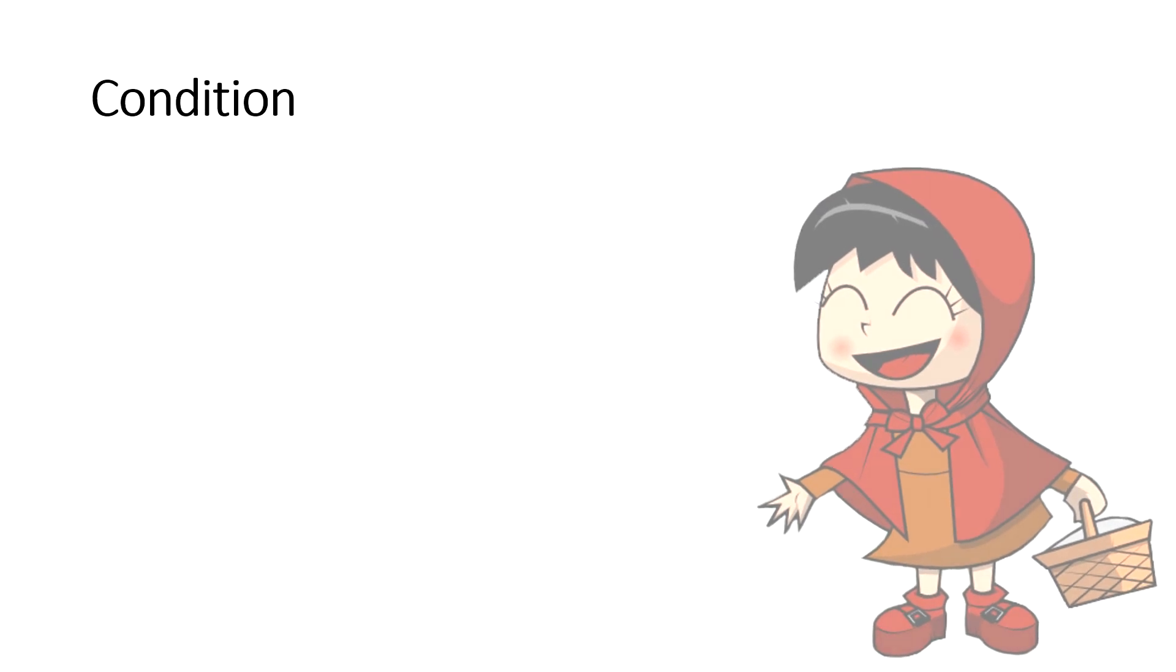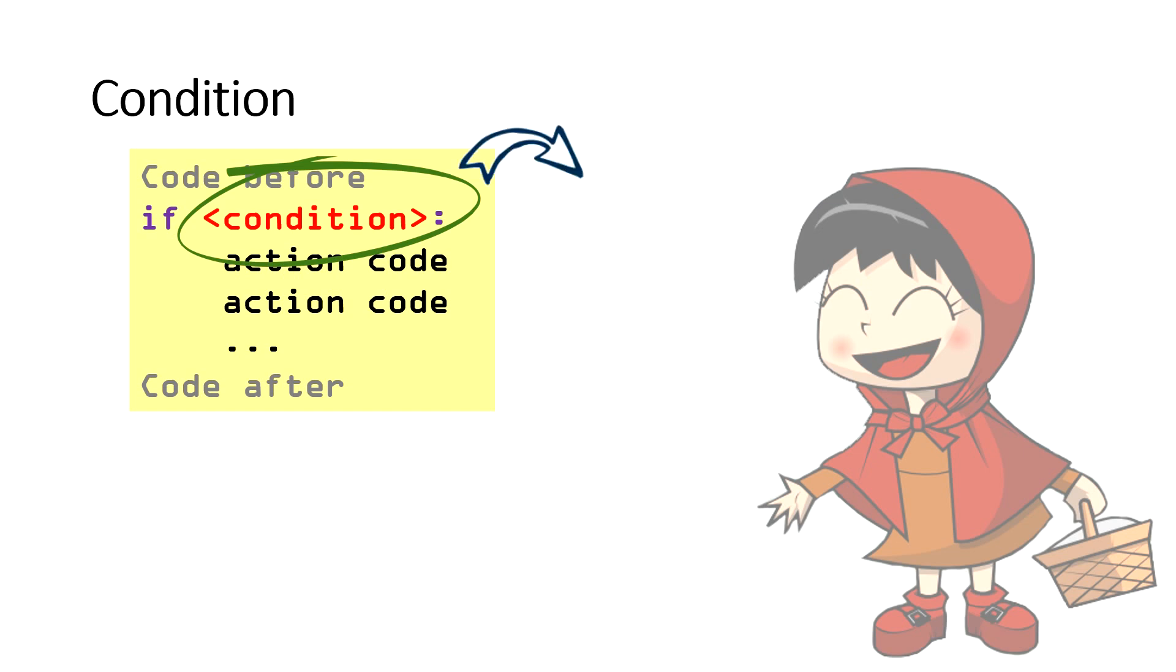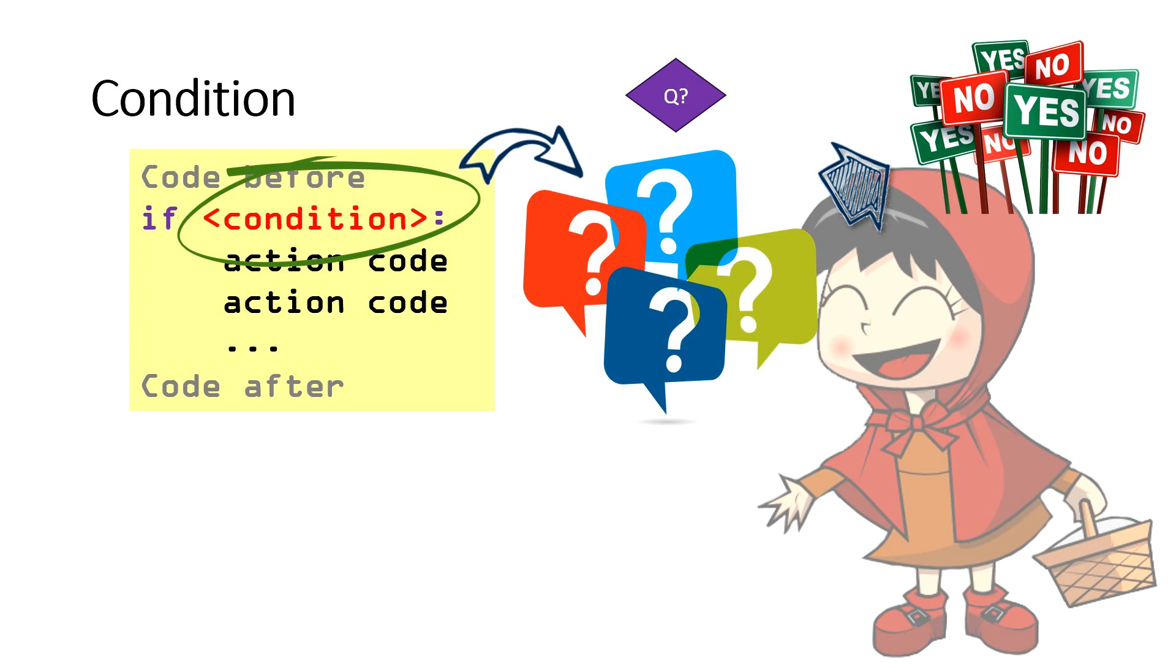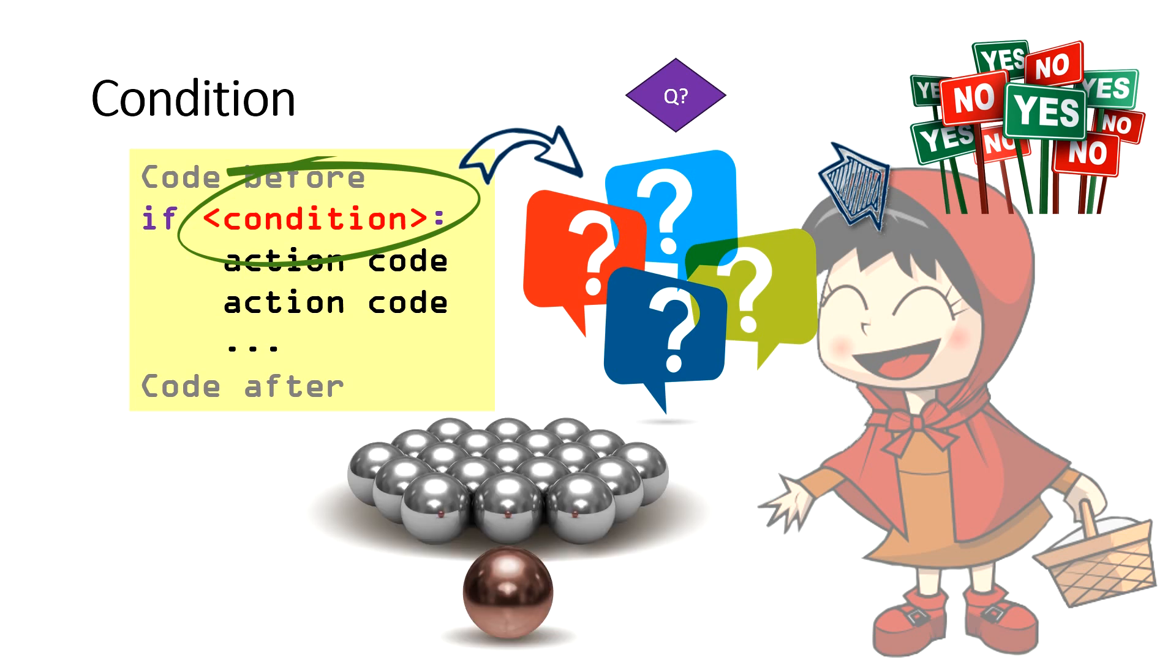As we saw in the last slide, a simple if statement structure has something called condition. And condition is nothing but a question or a group of questions that we represent them as a purple diamond. And those questions are the kind of closed questions that have only answers with yes or no. As we said, those questions might be a single question or they may be several questions. In case of a condition with multiple questions, we have to use logic operators that we explained in our second video.